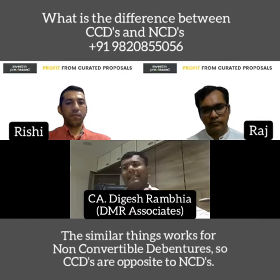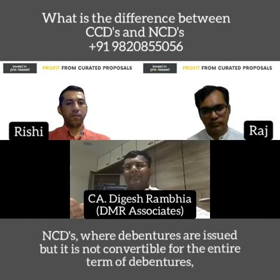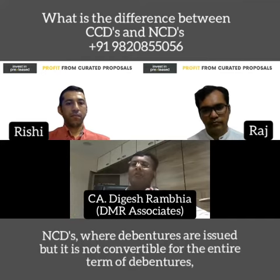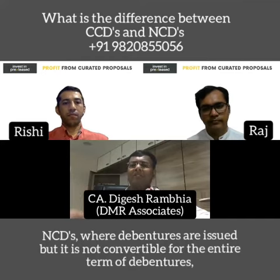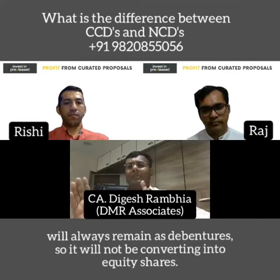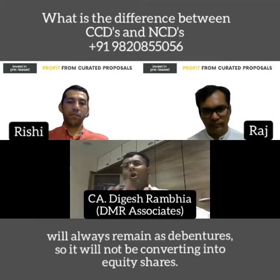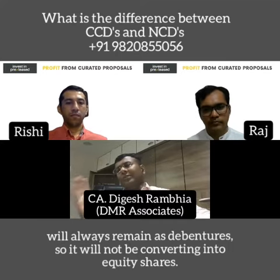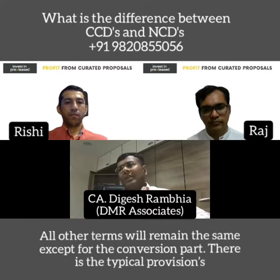CCDs are opposite to NCDs. With NCDs, debentures are issued but they are not convertible — for the entire term of the debentures, they will always remain as debentures and will not be converted into equity shares. All other terms remain the same except the conversion part.